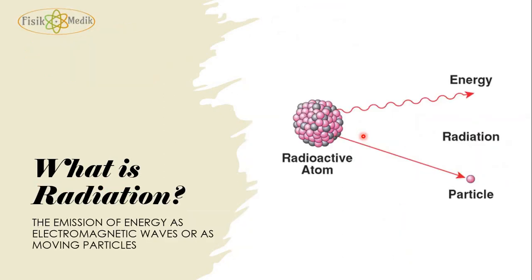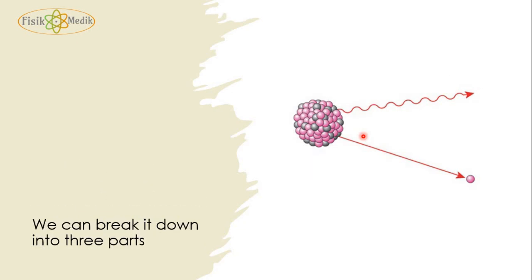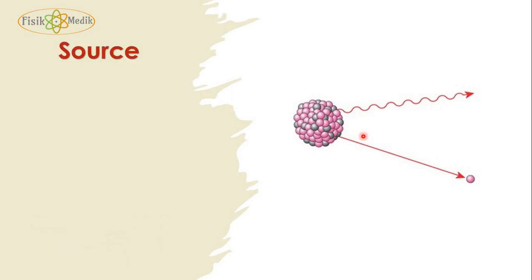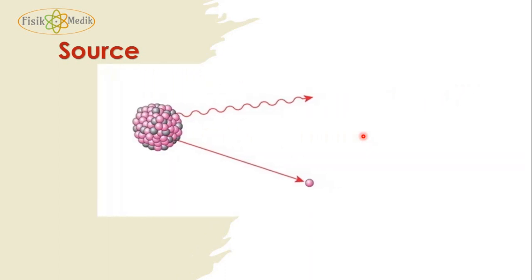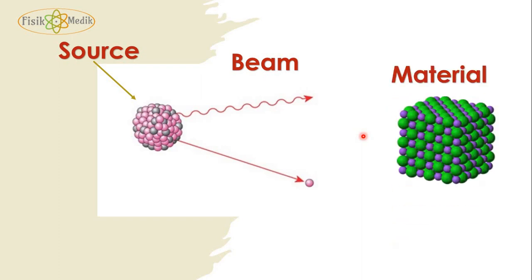What is radiation? As you can see in any dictionary, radiation is the emission of energy as electromagnetic waves or as moving particles. We can break this idea down into three parts: a source — in this case the atomic nucleus — the beam, which is the electromagnetic waves or the particles, and the material, which behaves very differently depending on the kind of radiation.